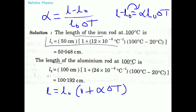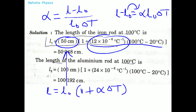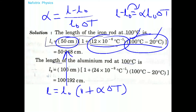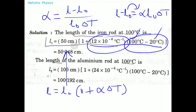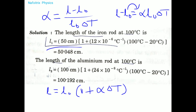Applying the formula to the iron rod: L₀ = 50 cm, alpha is the coefficient of linear expansion for iron, and ΔT = 100 - 20 = 80°C. Performing the calculation, the final length of the iron rod is 50.048 centimeters after expansion to 100°C.